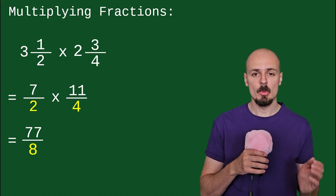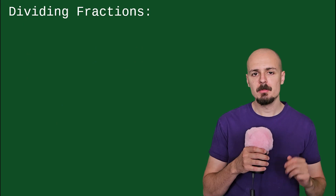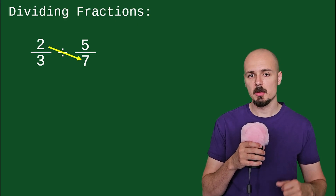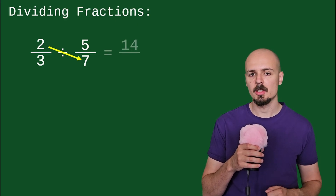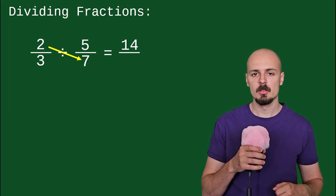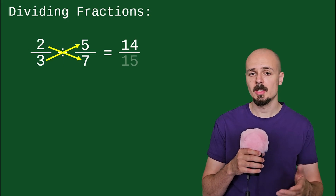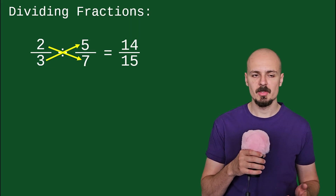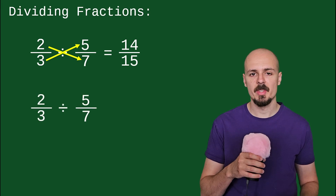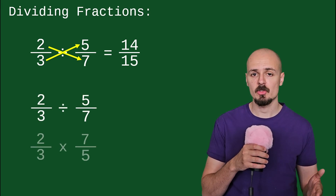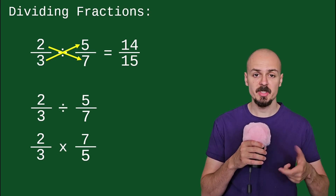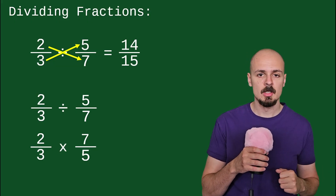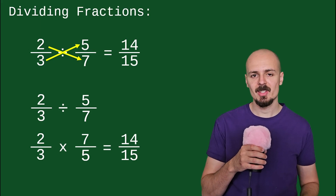That's multiplication. When we divide, it's almost as easy. There are two main methods. The first: take the first numerator — the 2 — and multiply it by the second denominator, the 7, giving you 14. Then multiply the first denominator, the 3, by the second numerator, the 5, giving you 15. I like to draw arrows to help remember what gets multiplied by what. The other method — my favorite — is to change the division sign to multiplication and flip the second fraction, writing its reciprocal. Then multiply as before. You get the same answer either way.